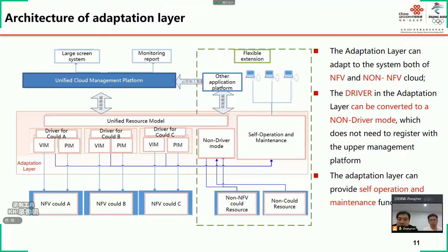The adaptation layer can not only adapt to the cloud system of NFV, but also can adapt to third-party cloud systems of non-NFV. The driver model can also be converted to a non-driver model. Other management platforms can obtain the original data through the adaptation layer, and can also obtain data processed by UCMP through open interfaces. This greatly expands the application range. The adaptation layer can deliver data from upper layer services, and at the same time can provide its own operation and maintenance functions. The adaptation layer is constantly improving.